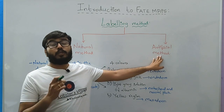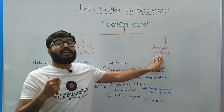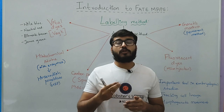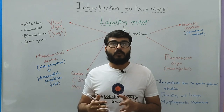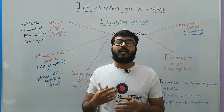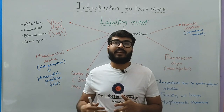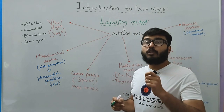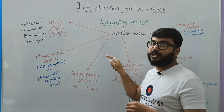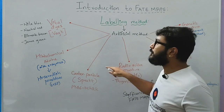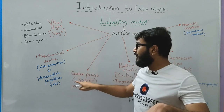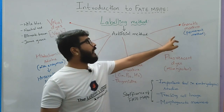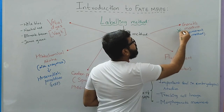The next major method is artificial labeling, done with the use of artificial colors injected into the developing embryo. One important requirement is that the chemicals or substances used must not hamper the development of the embryo. Based on the substance chosen, the artificial method of fate map construction includes six different steps: vital dyes, histochemical stains, carbon particles, radioactive markers, fluorescent dyes, and genetic markers.